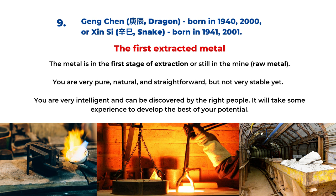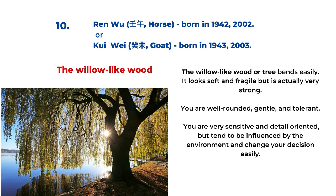The tenth type is for the Ren Wu or Kui Wei year, for birth years 1942, 1943, 2002, and 2003. It's called the willow-like wood. The willow tree has very long, soft branches and leaves that move in the wind. It looks very weak, but it's actually pretty strong and doesn't break easily. You are a well-rounded person — very gentle and tolerant. On the other side, you are sensitive and detail-oriented, but you tend to be influenced by the environment and change your decisions easily based on the environment.